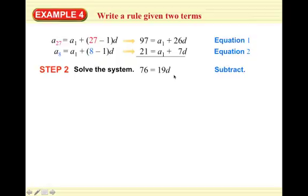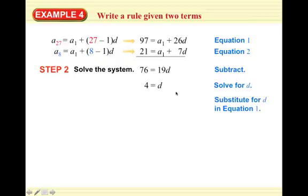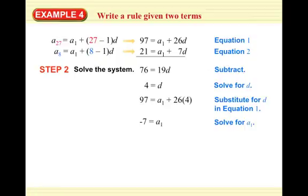We can divide to find D — we used the elimination method. 76 divided by 19 gives us D equals 4. Now we substitute D equals 4 into equation 1: 97 equals A1 plus 26 times 4. Solving for A1, we get A1 equals negative 7.